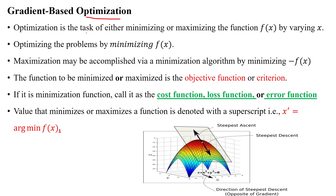Optimization is the task of either minimizing the value or maximizing the value of any function f(x) by varying the variable x. Minimizing f(x) is used in deep learning and machine learning applications because the error needs to be reduced. To reduce the error, we are going to use the minimization of function f(x).